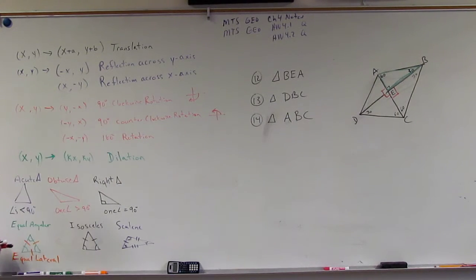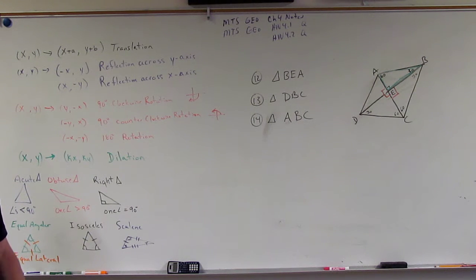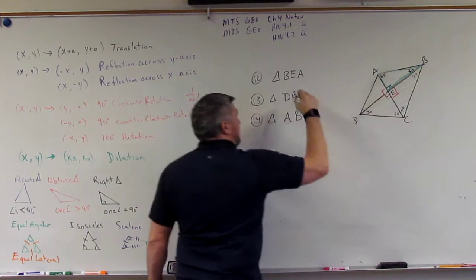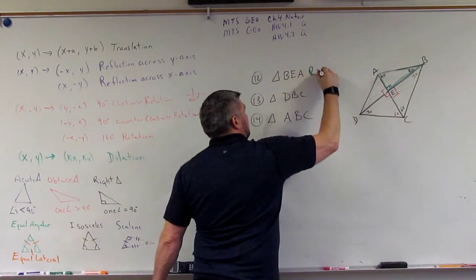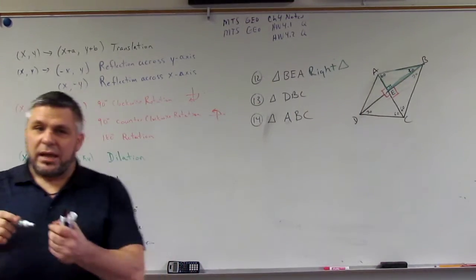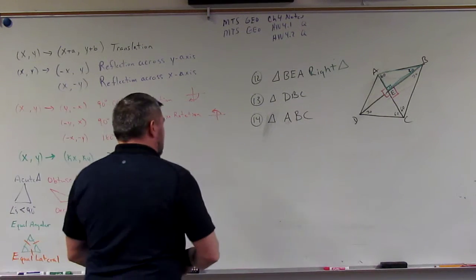So, what kind of triangle is that? Is that equiangular? Is it isosceles? Is it scalene? Right? Is it acute, obtuse, or right? Does it have a right angle? It has a right angle, right? This one right here? That means it's a right triangle. Okay. Does that make sense? If it has one right angle, it has a right triangle.